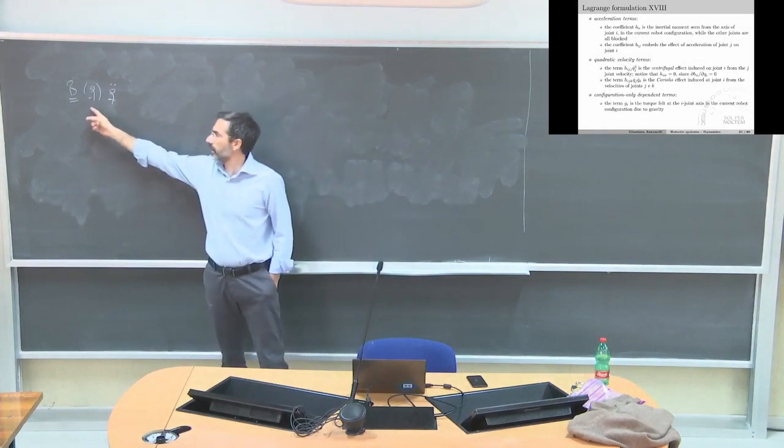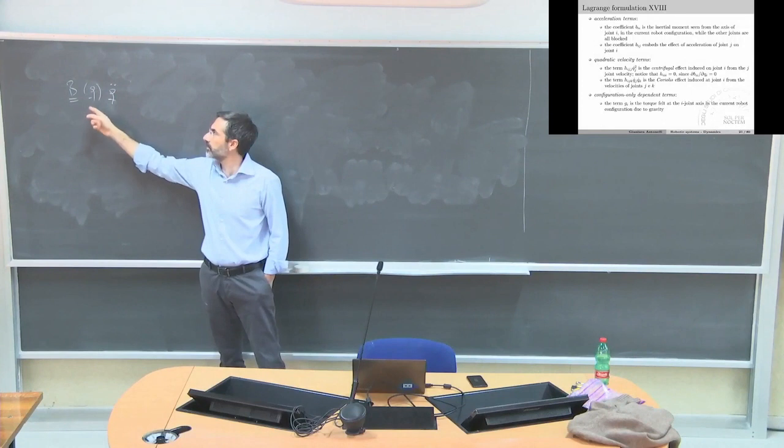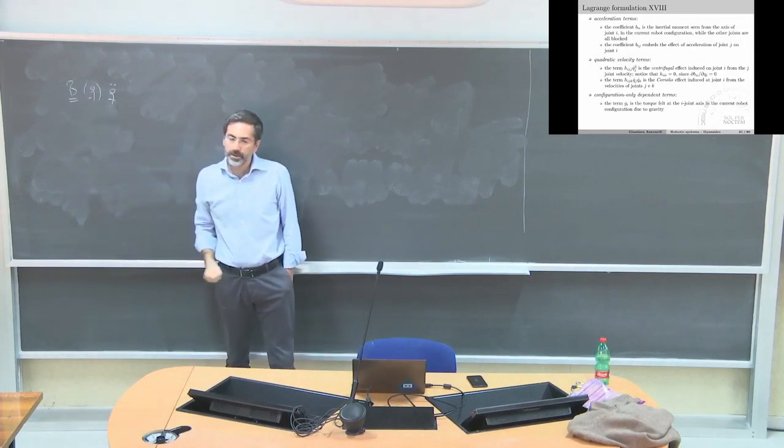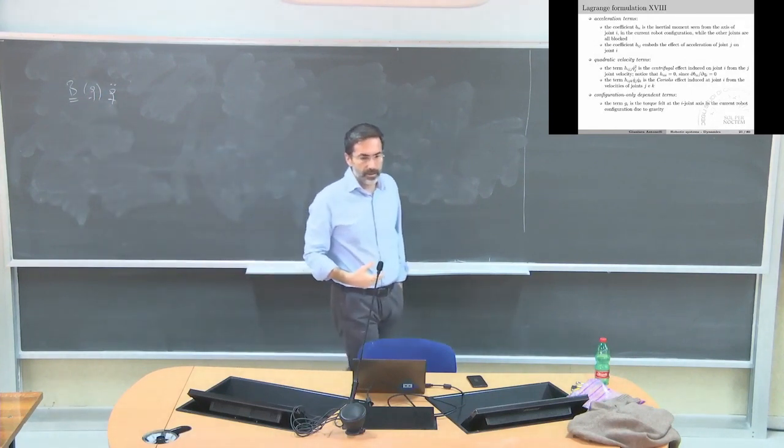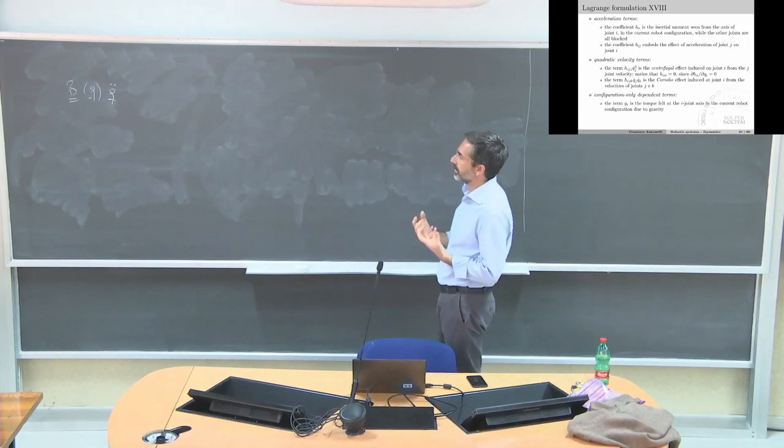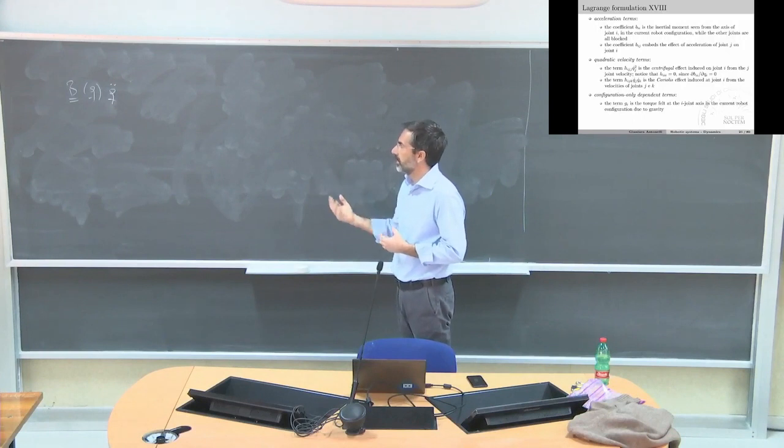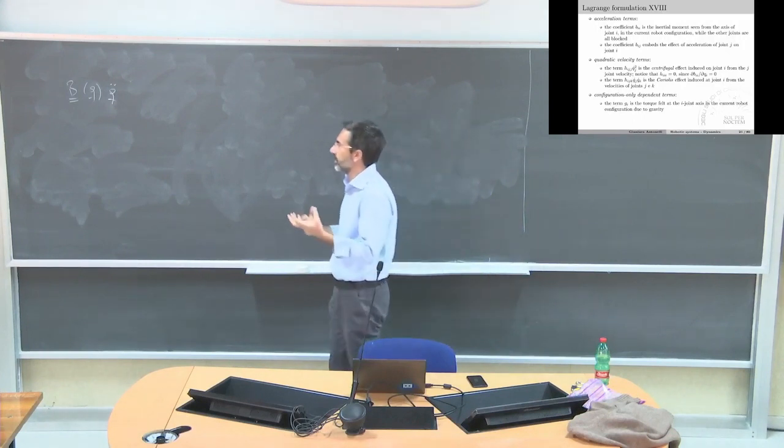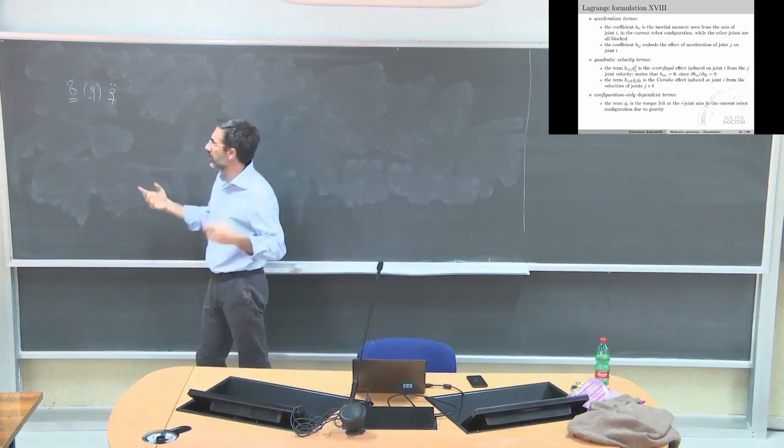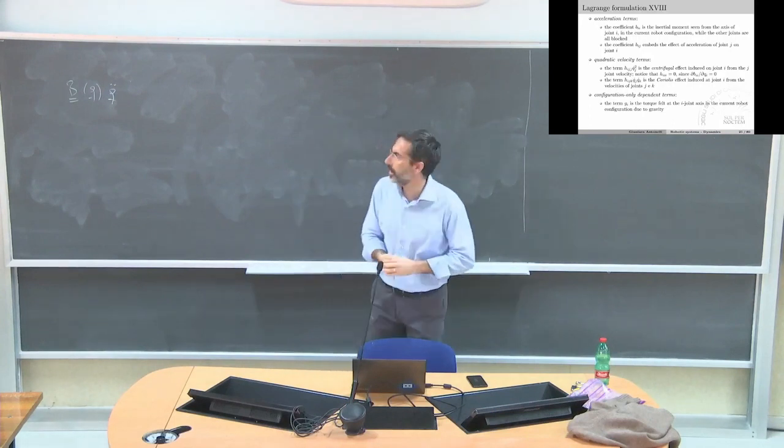This is a vector n by 1, n by n, n by 1. This is a vector n by 1 and here I have n by n configuration dependent elements. They represent the inertia seen from a certain axis in a certain configuration.